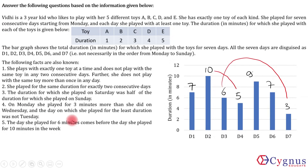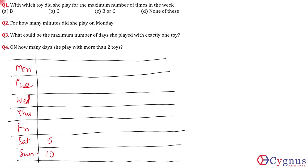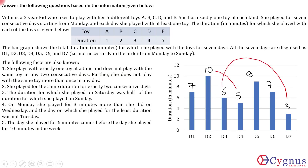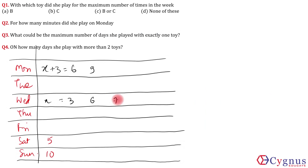Next condition: on Monday she played for 3 more minutes than she did on Wednesday. So if Wednesday is X minutes, Monday is X+3. The possible pairs with a difference of 3 from our remaining values are: Wednesday=3 and Monday=6, or Wednesday=6 and Monday=9. A third option, Wednesday=7 and Monday=10, is not possible since 10 is already assigned to Sunday. So the only two possibilities are (Wednesday=3, Monday=6) or (Wednesday=6, Monday=9).